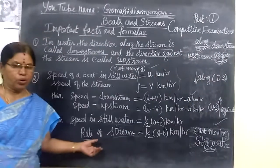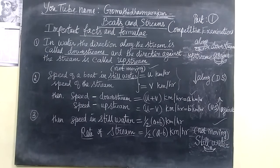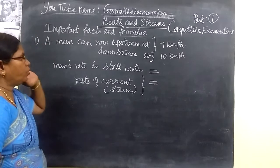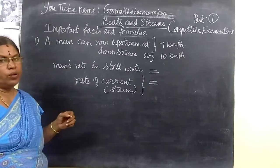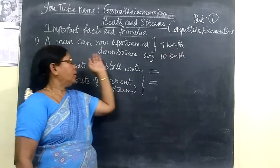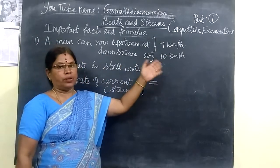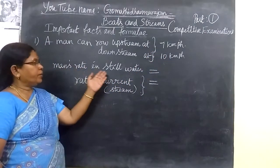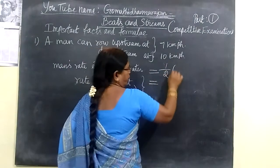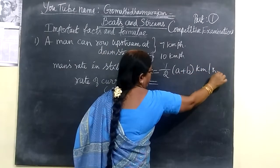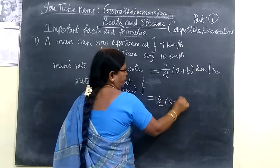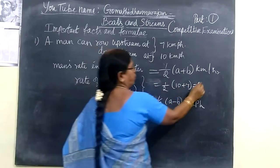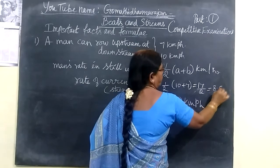Let us see one example under this topic. A man can row upstream at 7 kilometers per hour and downstream at 10 kilometers per hour. Speed in still water equals half bracket a plus b kilometers per hour. So this equals half of (10 plus 7), which is 17 by 2, equal to 8.5 kilometers per hour.